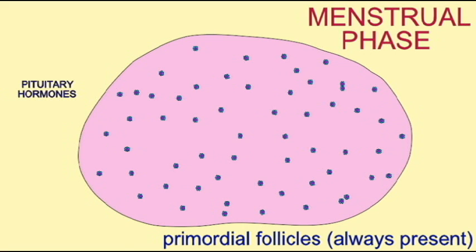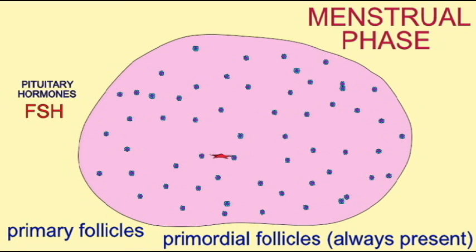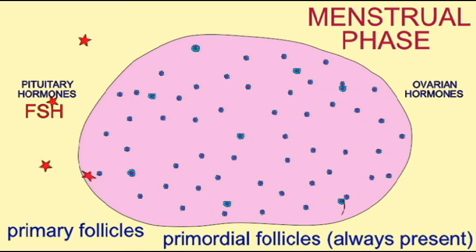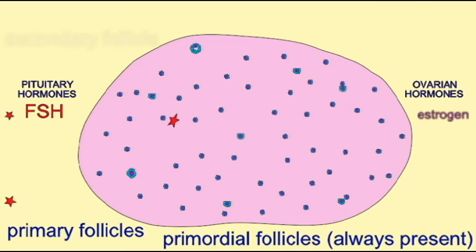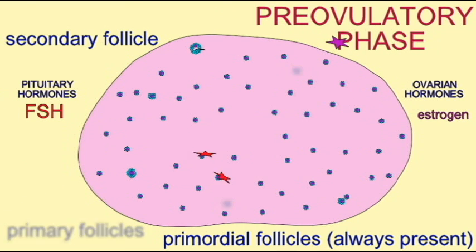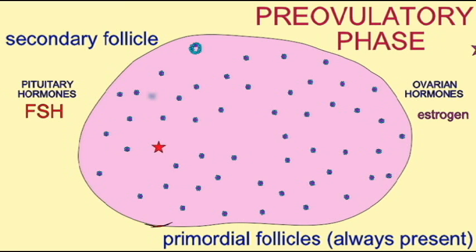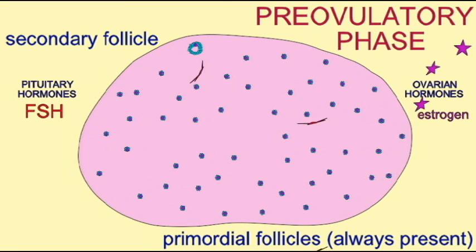During the menstrual phase, the pituitary hormone FSH, or follicle-stimulating hormone, will stimulate the development of a number of primordial follicles, where they will continue their development into the stage of being primary follicles. There may be 20 or 25 primary follicles which begin a menstrual cycle, of which one will become a secondary follicle. When the secondary follicle begins to make its own estrogen, that will cause a decrease in the levels of FSH, and so the other primary follicles will break down and deteriorate.